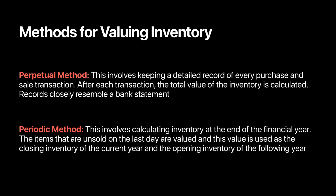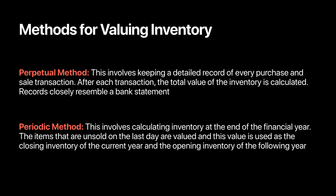When valuing inventory, firms use different methods to keep a record of their goods: the perpetual method and the periodic method. Under the perpetual method, detailed record-keeping is maintained where every purchase and sale transaction is recorded. Under the periodic method, inventories are calculated at the end of the financial period or financial year — it's an easier, quicker way to arrive at the value of inventory. We need to learn how to calculate inventory using both methods, which we shall do in the coming videos.